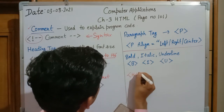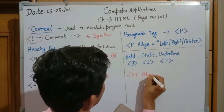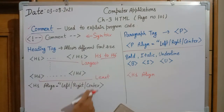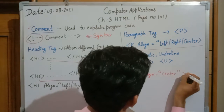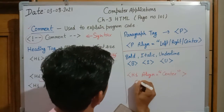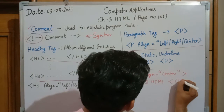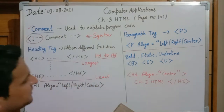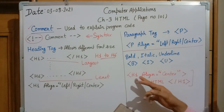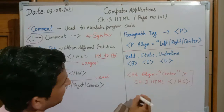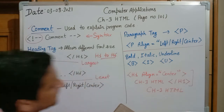To write a heading, for example 'Chapter 3 HTML', you write the h1 tag. Notice that it can be positioned in the center, so you set the alignment attribute: h1 align=center, then write the heading text 'ch3 HTML', and close with the h1 closing tag. When you run the program it will display the output centered, in the largest font size.